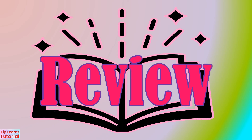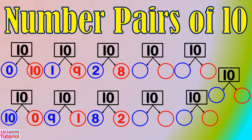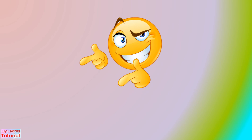Let's review! The number pairs of 10 are: 0 and 10, 10 and 0, 1 and 9, 9 and 1, 2 and 8, 8 and 2, 3 and 7, 7 and 3, 4 and 6, 6 and 4, and 5 and 5. Now you know the number pairs of 10 — it's your turn to enumerate them!